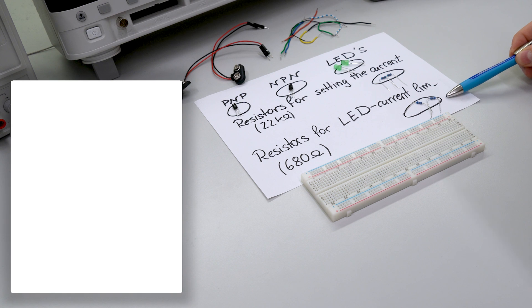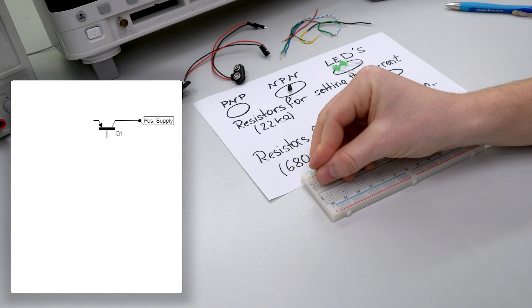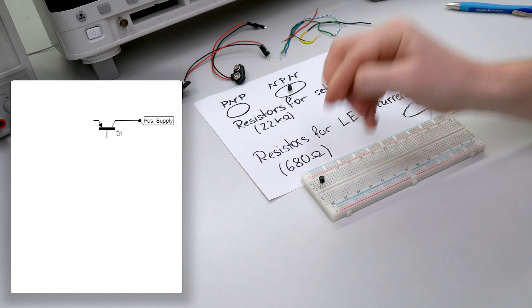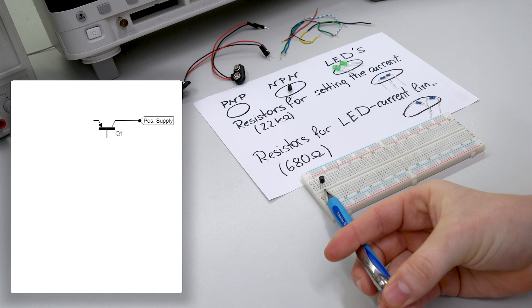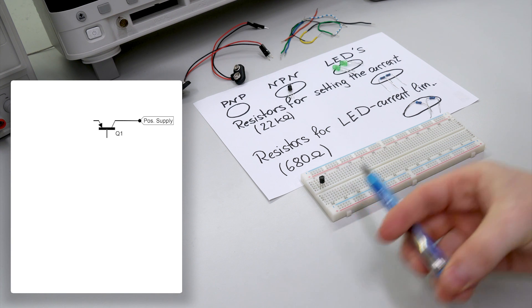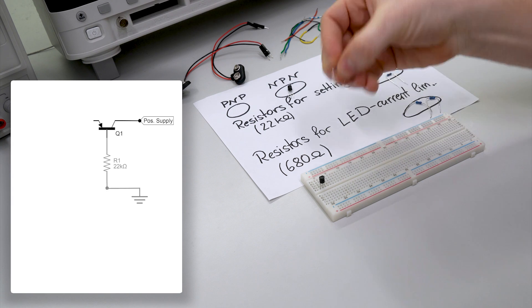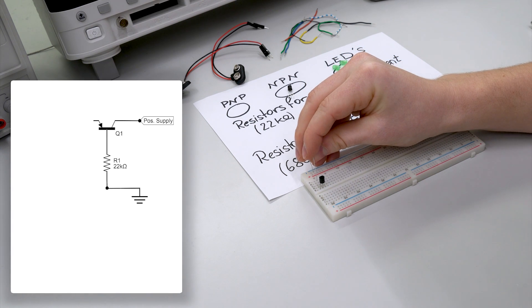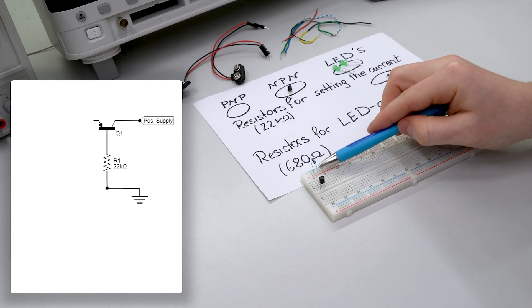So let's get started with the positive supply. First of all we need the PNP transistor. It should be placed in a way such that the emitter is on the left side, base in the middle and collector on the right side. Then we need a resistor for limiting the base current. So the base is now connected with this resistor to ground.